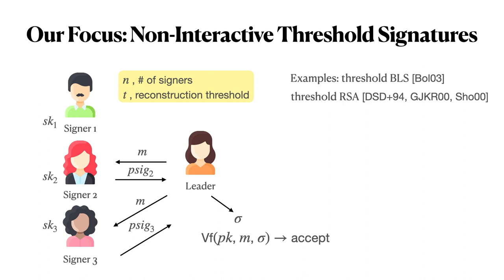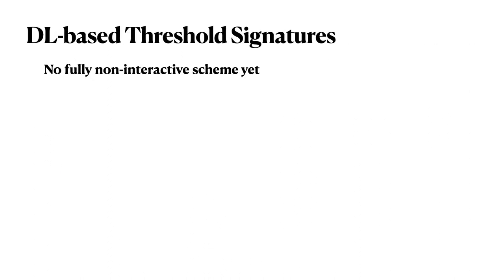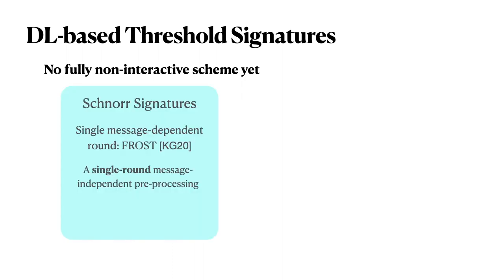The leader combines these partial signatures into a final signature representing the group. Examples of fully non-interactive schemes include threshold BLS and threshold RSA. But for discrete log-based schemes, in particular pairing-free ones, there do not currently exist any fully non-interactive schemes. However, for Schnorr signatures, there is the two-round FROST threshold signature scheme, which consists of a single message-independent preprocessing followed by a single signing round. We refer to this as partially non-interactive.